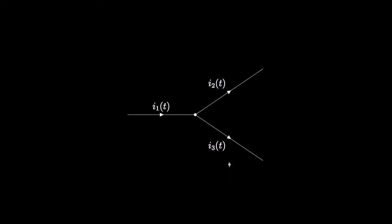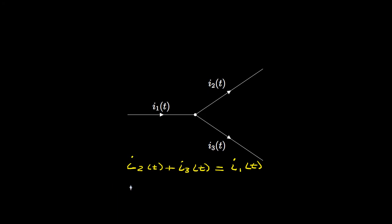Another way to write this would be that I2 minus I1 is equal to zero. We can use the same principle with three wires connected at a node. In this example, the currents I2 and I3 have reference directions out of the node, and the current I1 has a reference direction into the node. Therefore, the sum of I2 and I3 must be equal to I1, or I2 plus I3 minus I1 must be equal to zero.